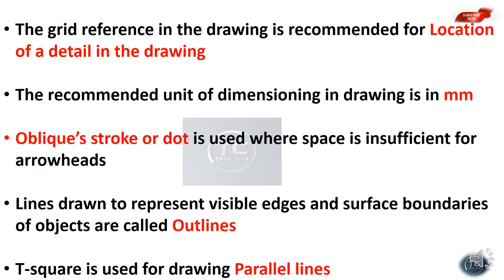Lines drawn to represent visible edges and surface boundaries of objects are called outlines. A T-square is used for drawing parallel lines.